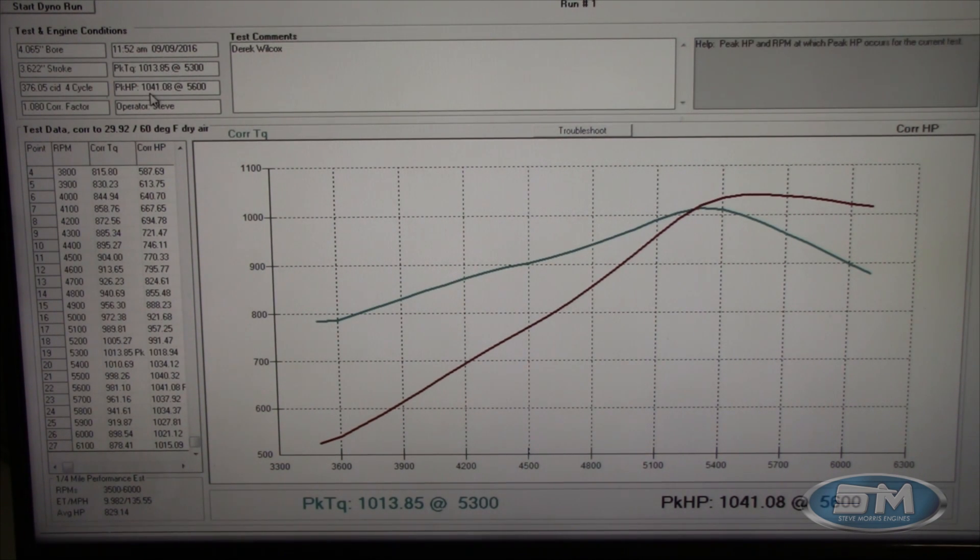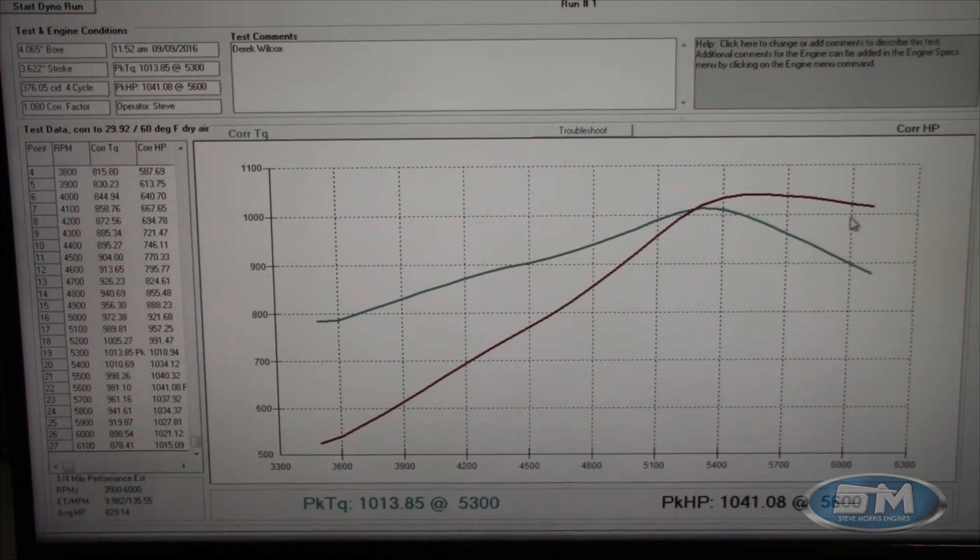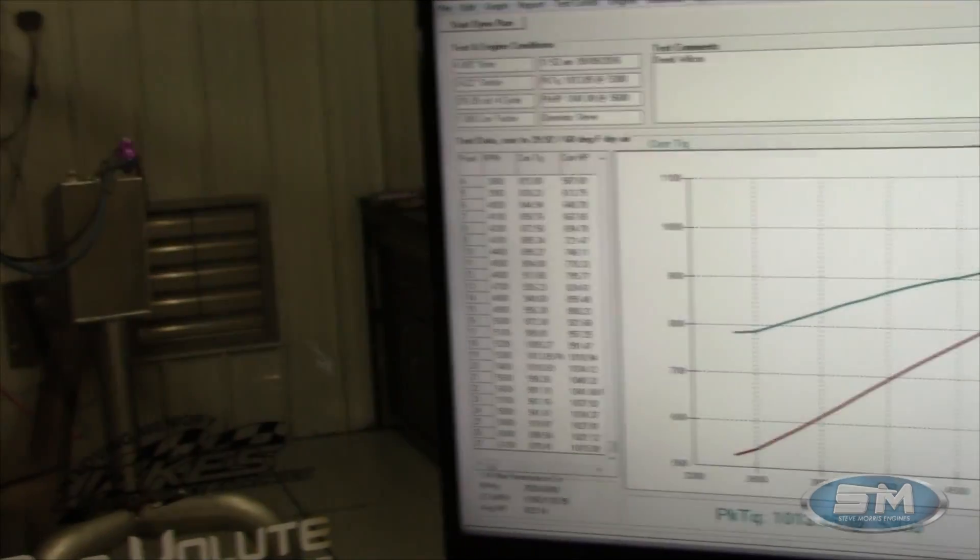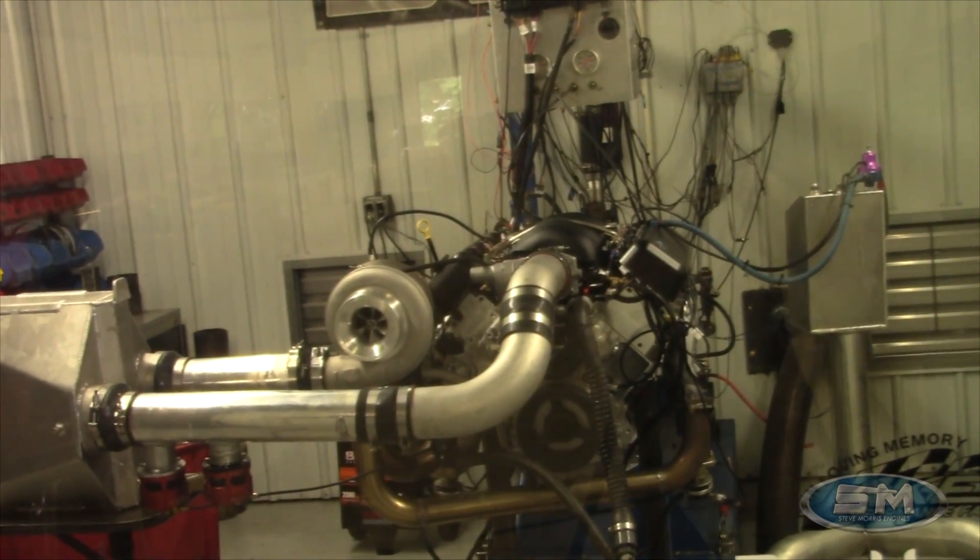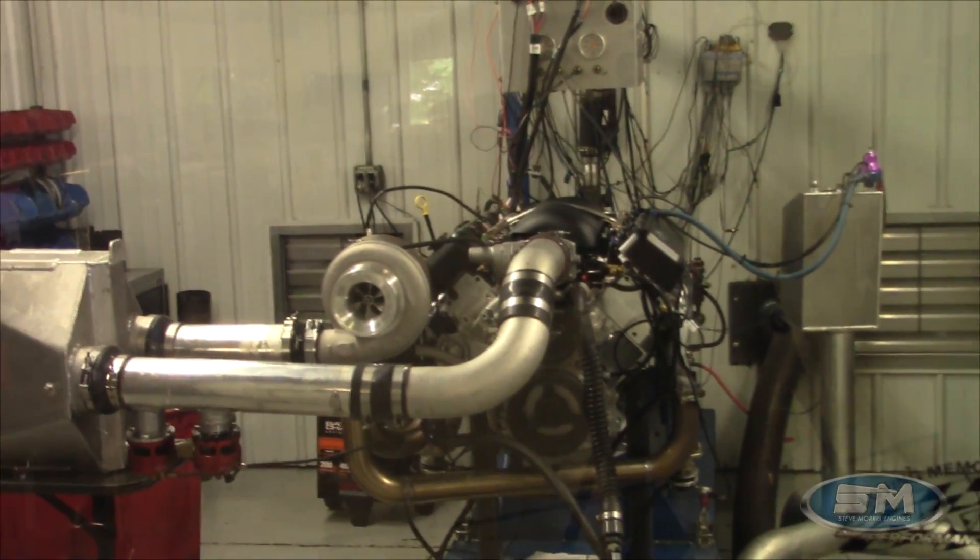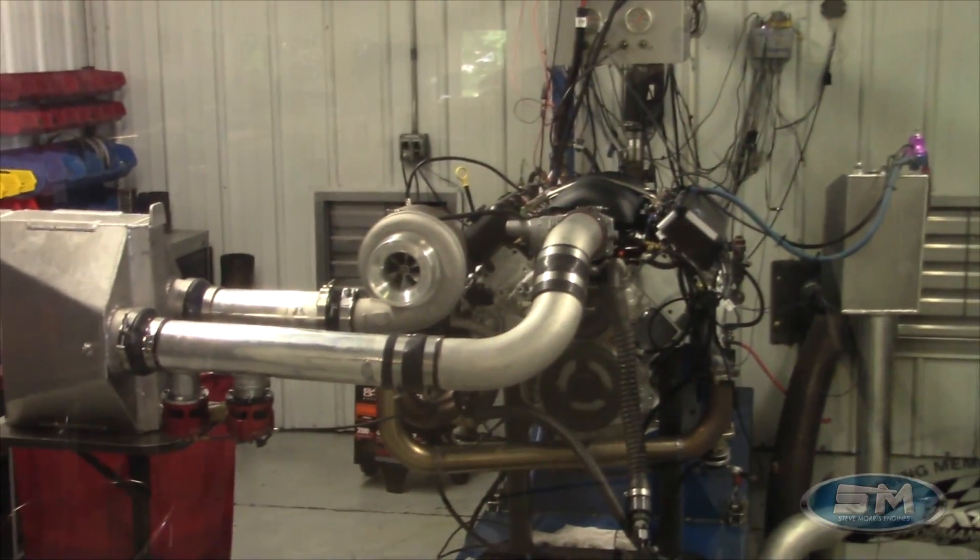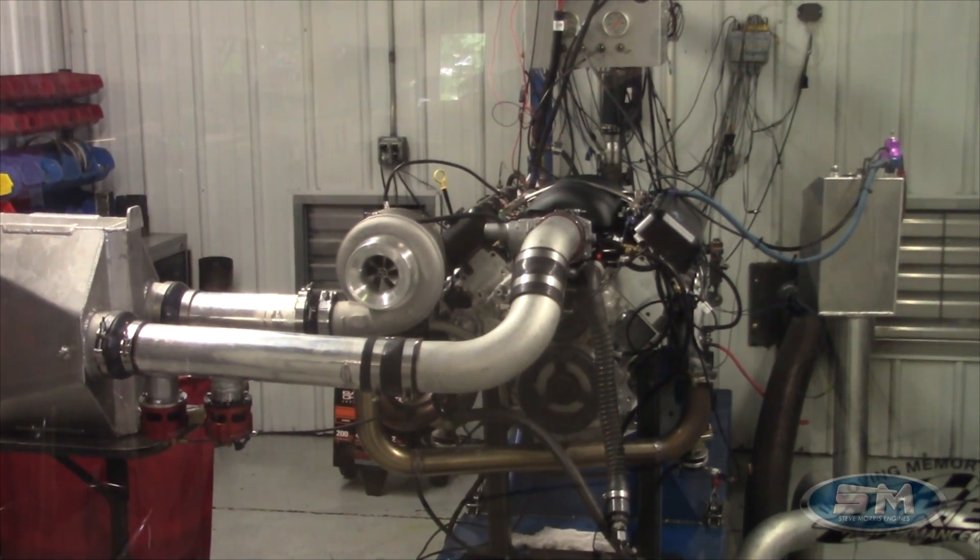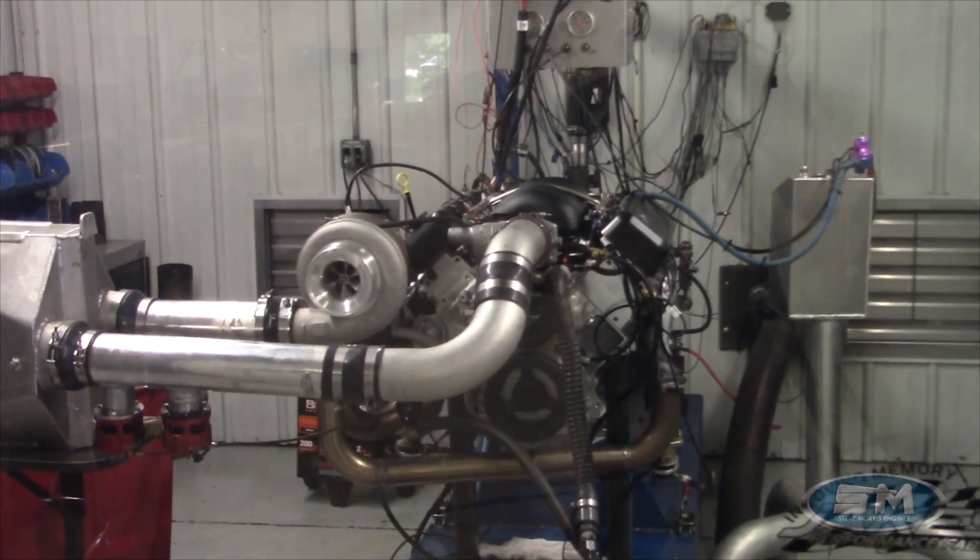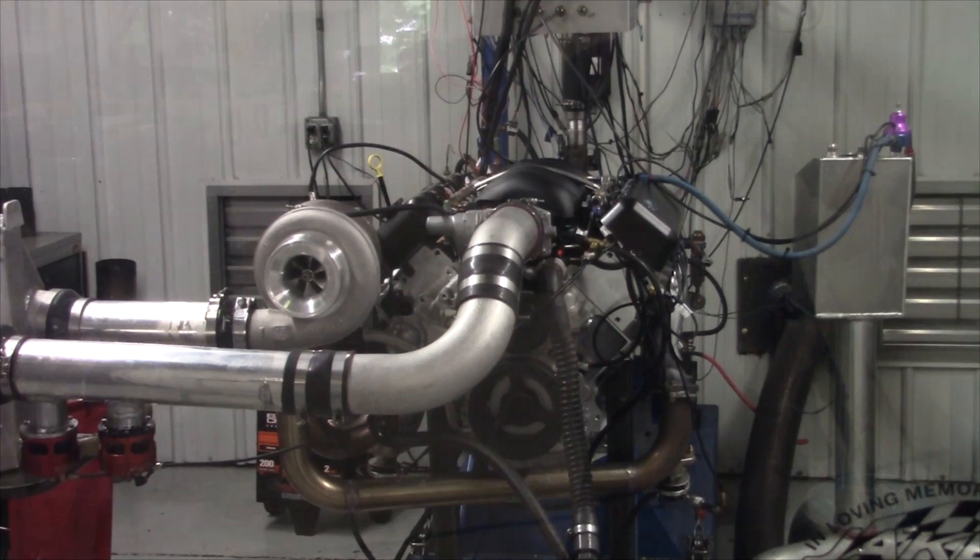So, peak torque, 1,013, peak horsepower, 1,041, on straight 93 octane gas. Like I said, this was at a peak boost of 15, went down to 14, almost 13 and a half over here. So anyways, very happy with this. I think Derek's going to be real happy as he puts this in, well, I'm not even sure what he's going to put it in. I think he's going to put it in a Colorado pickup truck or something. I'm not exactly sure. But anyways, I'm Steve Morris, Steve Morris Engines. Have a great day.